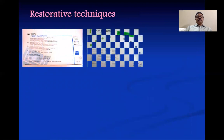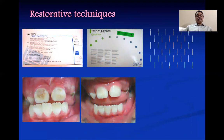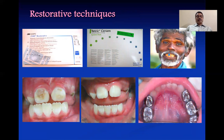Regarding restorative techniques: resin composites and visible light cure composites are used. You can see a restoration done in the mixed dentition — a central incisor on the labial aspect which was grossly carious has been restored with visible light cure composite resin. You can also see stainless steel crown restorations which we undertake in young children.